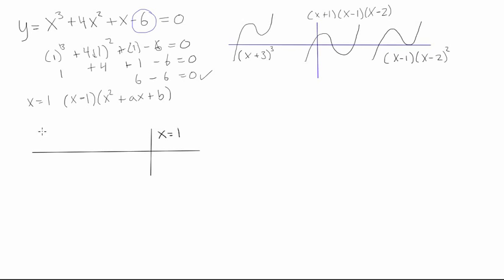So the first one is 1, and then the next one was 4, and the next one was 1, and the last one was -6. And then what we do is we just bring down the 1 here. And then what we do is we multiply our root by this number and we write it here. So this is going to be 1 × 1 and we're going to put it there.